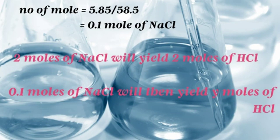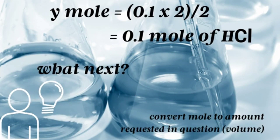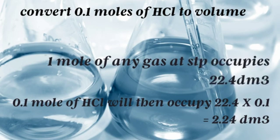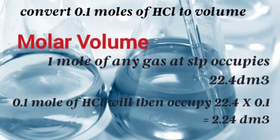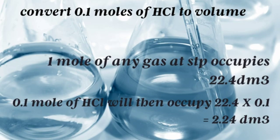Now convert 0.1 moles of HCl into volume. Since one mole of any substance occupies 22.4 dm³ at STP, then 0.1 moles of HCl will occupy 0.1 × 22.4 dm³ = 2.24 dm³. Always be careful with your units — in chemistry, your units alone will guide you on how to solve any calculation problem. That's the end of this section. There are examples available for you to try. See you in the next class!